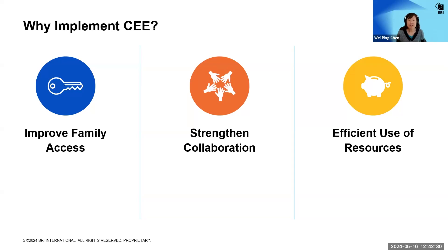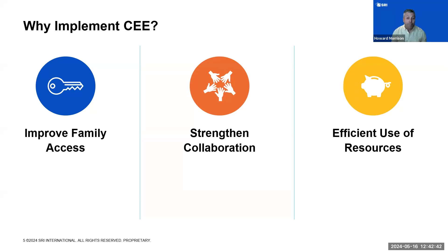In our learning community, First 5 Alameda County was planning to build a CEE system explicitly to increase equity and access to services for families. When you use CEE, rather than compete, providers collaborate with each other as their main strategy for maintaining full enrollment. Providers have equal access to a large pool of families looking for services. And once enough momentum is built and enough providers are part of a system that families go to almost exclusively, even more providers will join that network to avoid being left out — and this is what we saw happen in Ready Region West in Virginia.